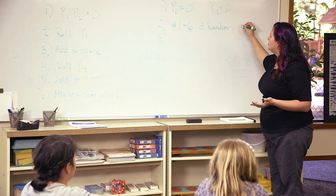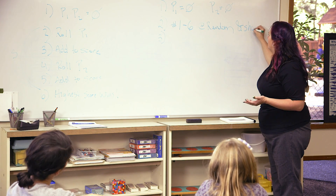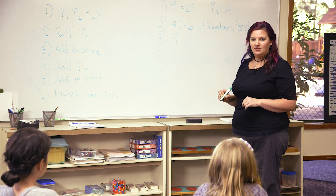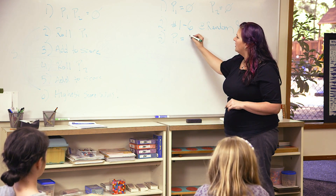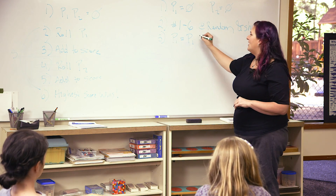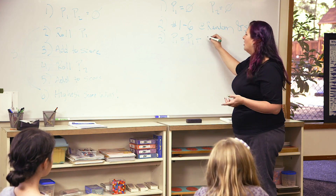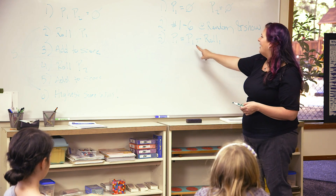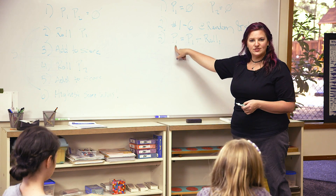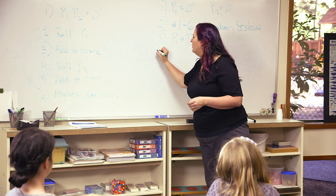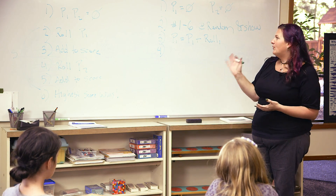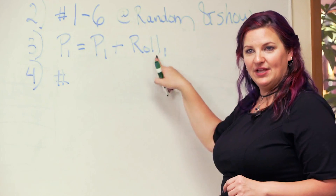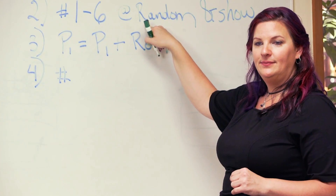So it's going to choose the number and show it. Then it's going to take player one's score — P1 — and the new score will be P1 equals the old score plus whatever this roll was. We'll call it roll one to show that it's player one — old score plus roll becomes the new score. Now it's the second player's turn. Once we've got player one's done, we have to do this again for player two. So we'll choose another random number.